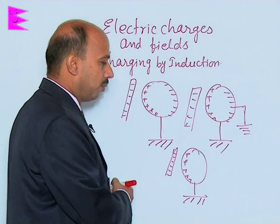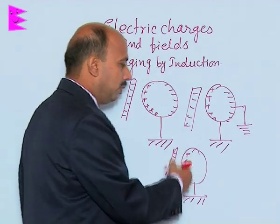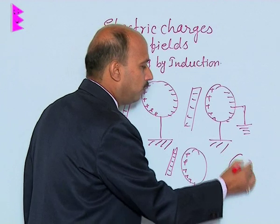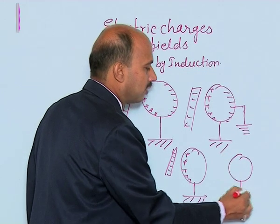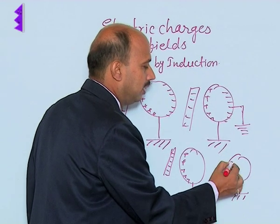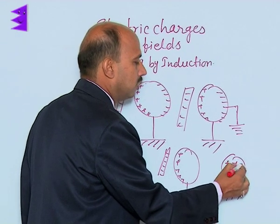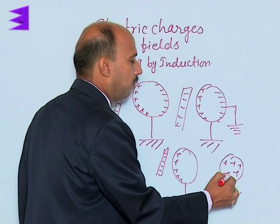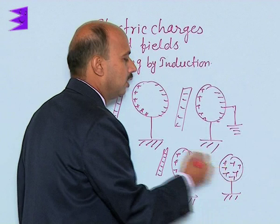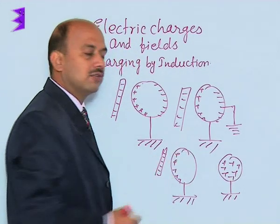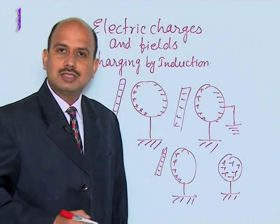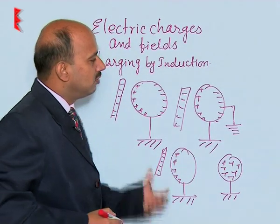Now remove the rod — the positive charges are redistributed on the surface of the body. So this body is now positively charged.